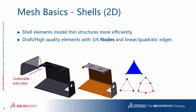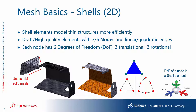In SolidWorks Simulation, our shell elements look like triangles. There are two types again. The draft quality has three corner nodes and linear edges. The high-quality shell has six nodes — three in the corners and three on the quadratic edges. In general, each node in a shell element has six degrees of freedom: three translational and three rotational.